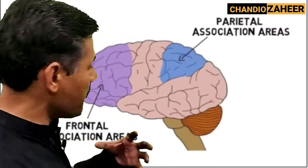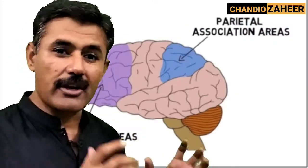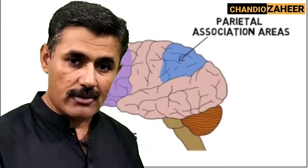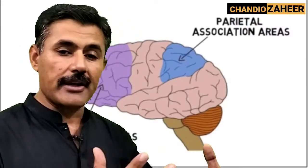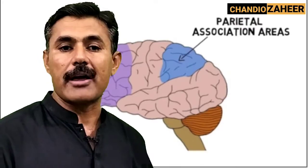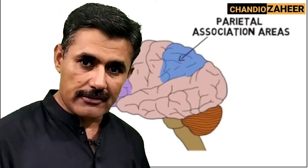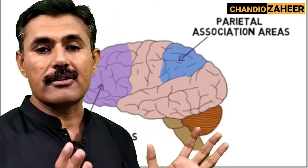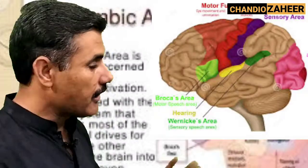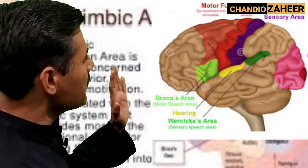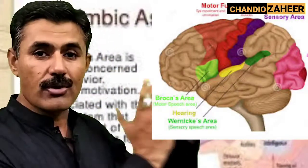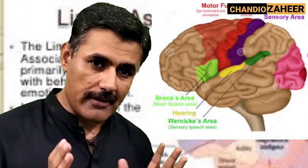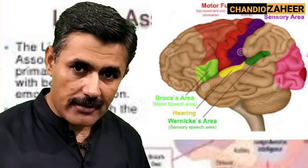These inter-neurons are short axon inter-neurons. They are present in a particular region — they receive the stimuli and they analyze it. Once these inter-neurons analyze the stimuli, it is finally sent to motor neurons to perform a particular function.